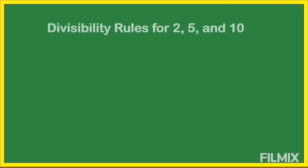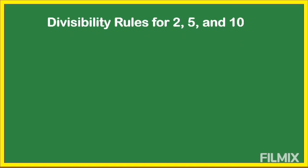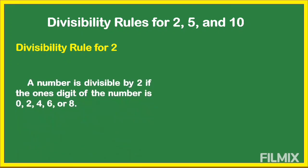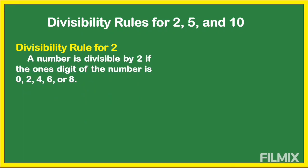Okay, here we go guys. I grouped the numbers having similar rules. The first one is divisibility rules for 2, 5, and 10. How do we know that the number is divisible by 2? A number is divisible by 2 if the one's digit of the number is 0, 2, 4, 6, or 8 — in short, an even number. For example: